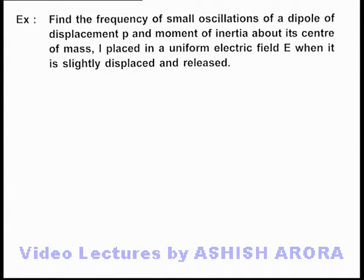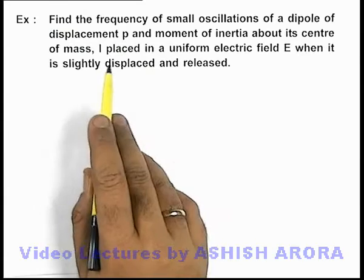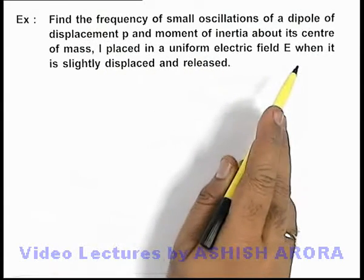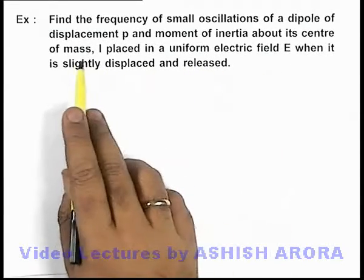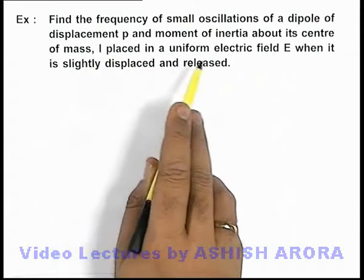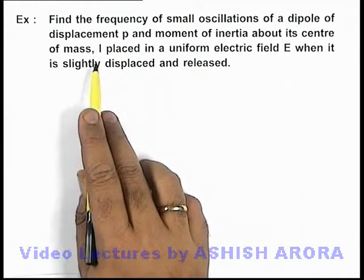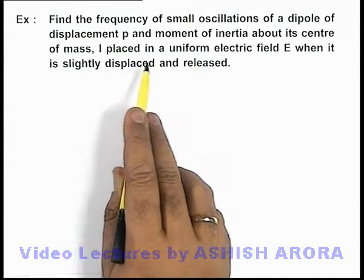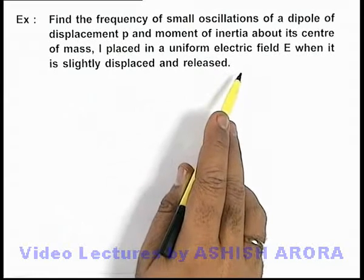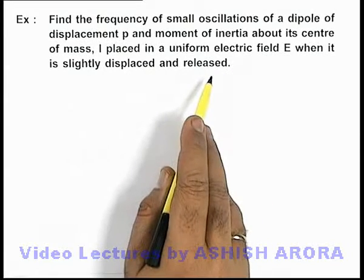In this example, we are required to find the frequency of small oscillations of a dipole of dipole moment p and moment of inertia about its center of mass I, which is placed in a uniform electric field E when it is slightly displaced and released.